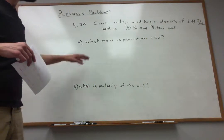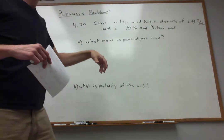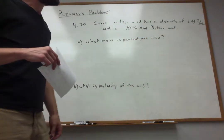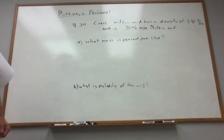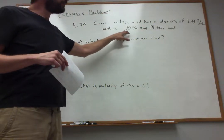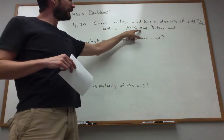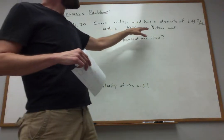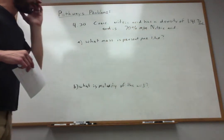The problem says that concentrated nitric acid that you might buy has a density of 1.41 grams per milliliter. That acid is also 70% by mass. So I put M/M here, that just means by mass percent, nitric acid.